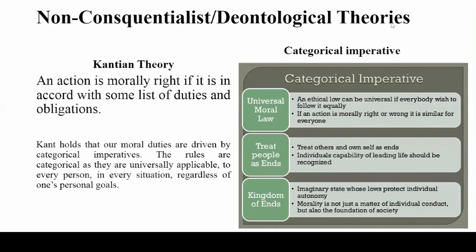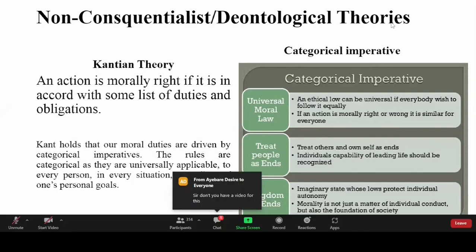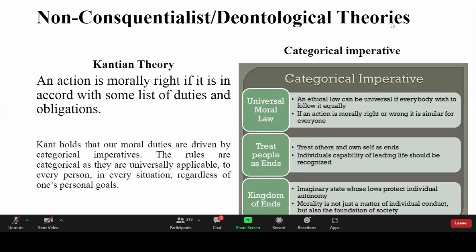What is right under any circumstances should be in accord with one's duties and obligations. For example, when you look at our parents, they have duties and obligations — they have to provide tuition, shelter, clothing, eating, everything. And if they do not do that, it means that they are wrong.